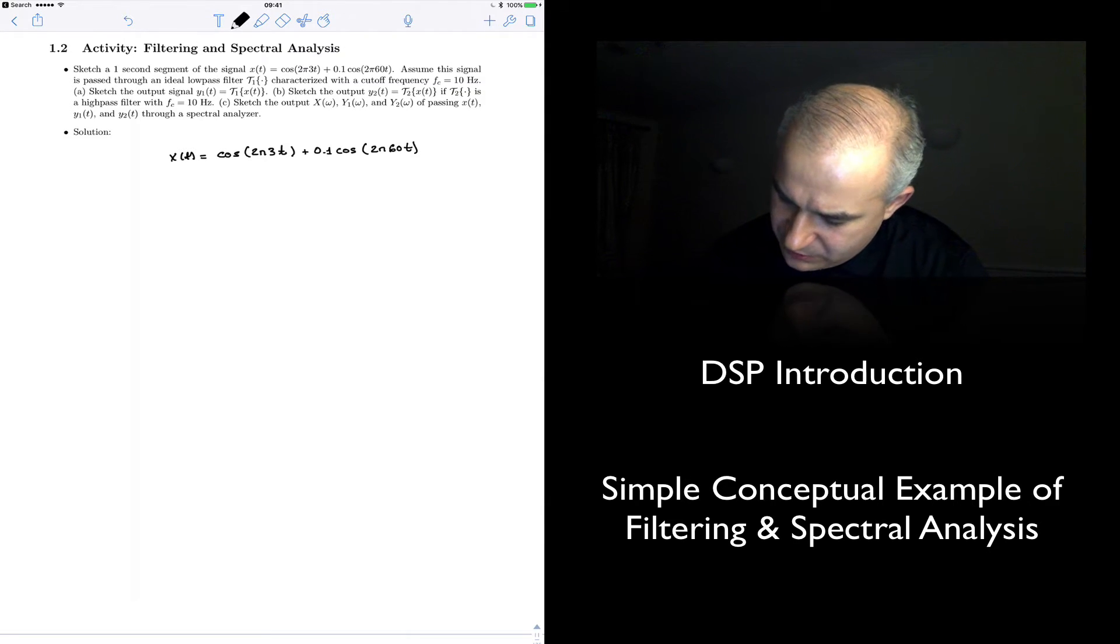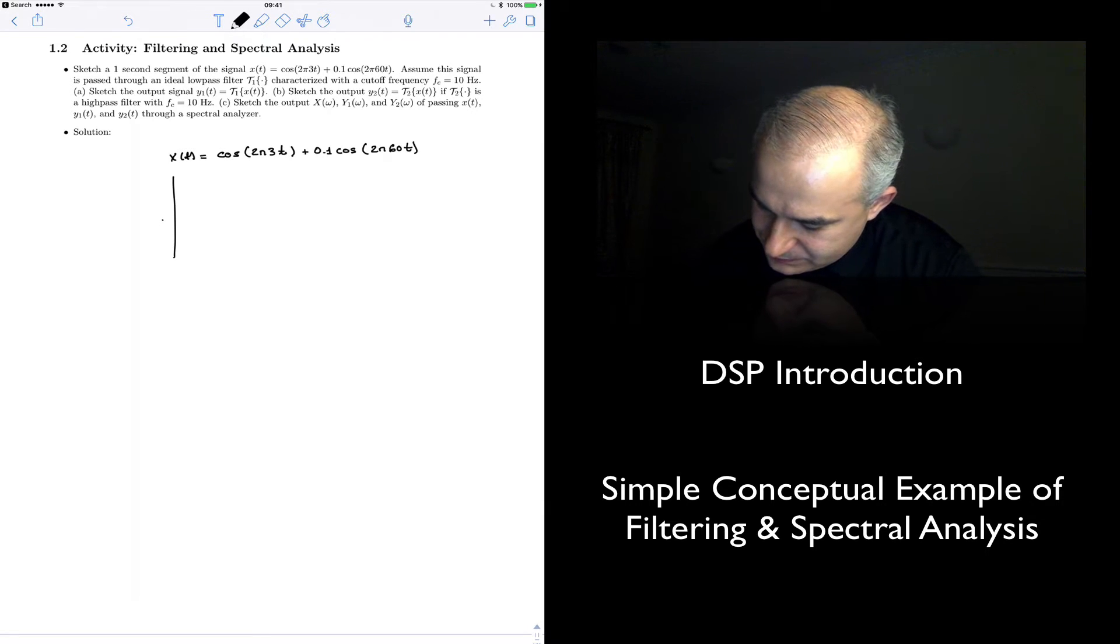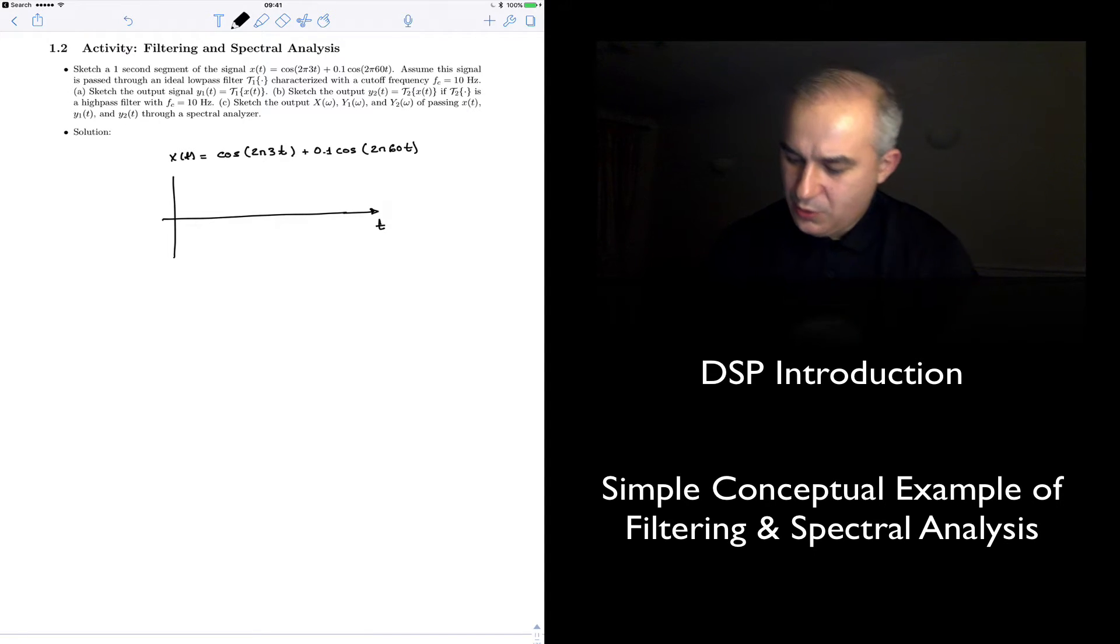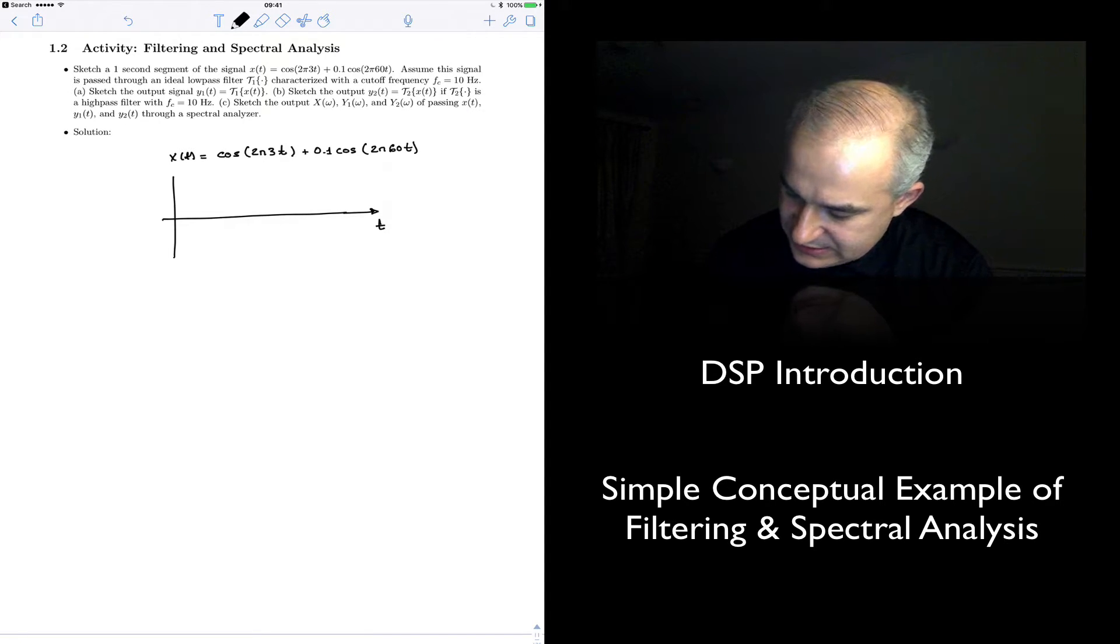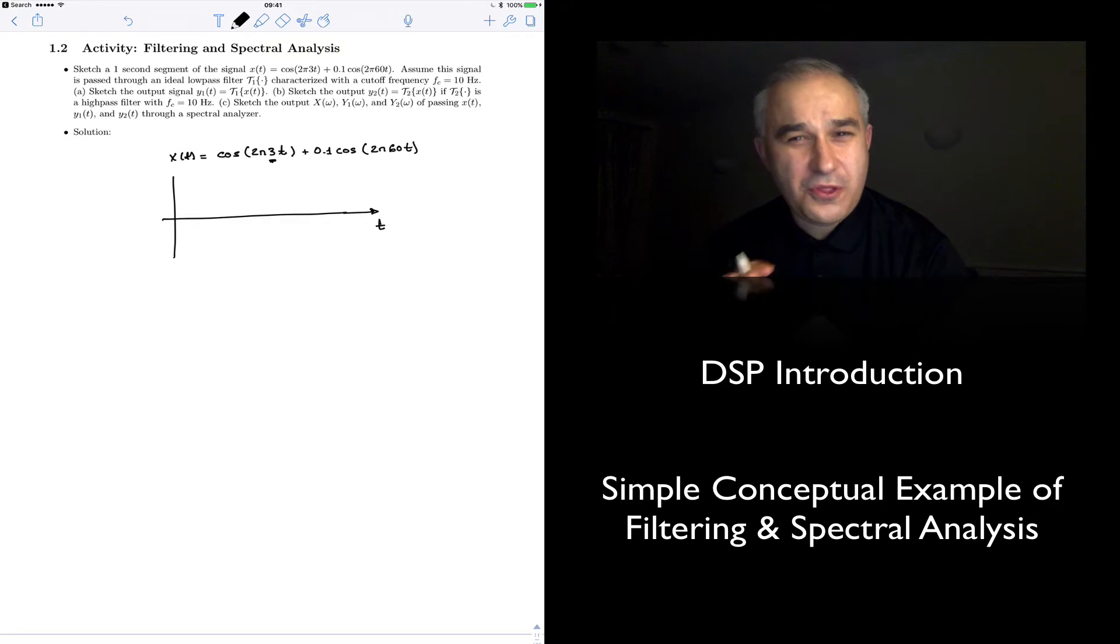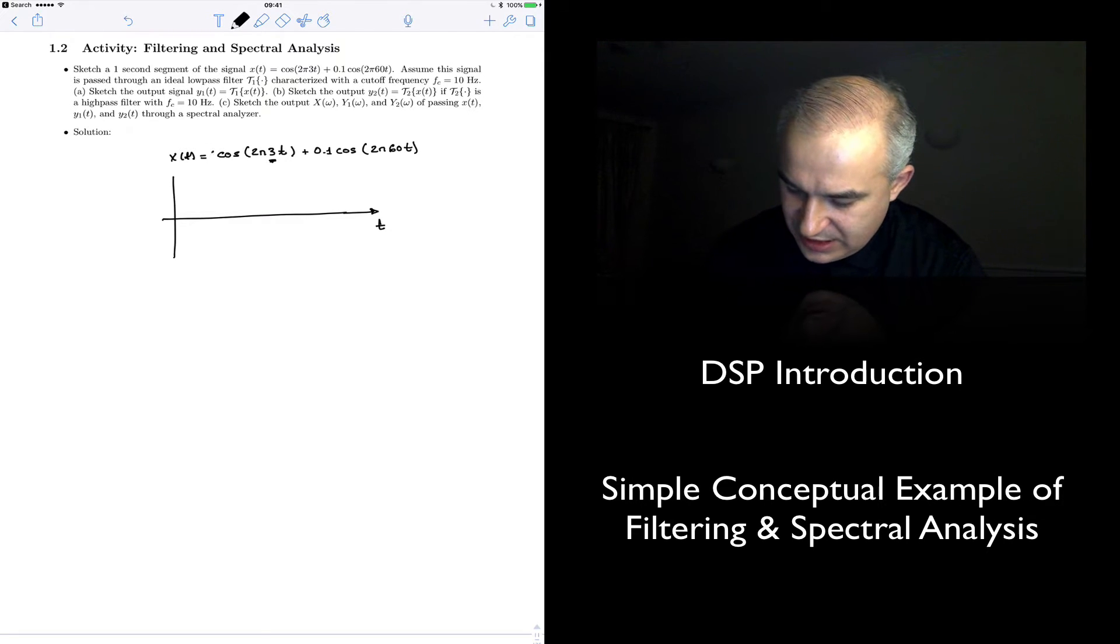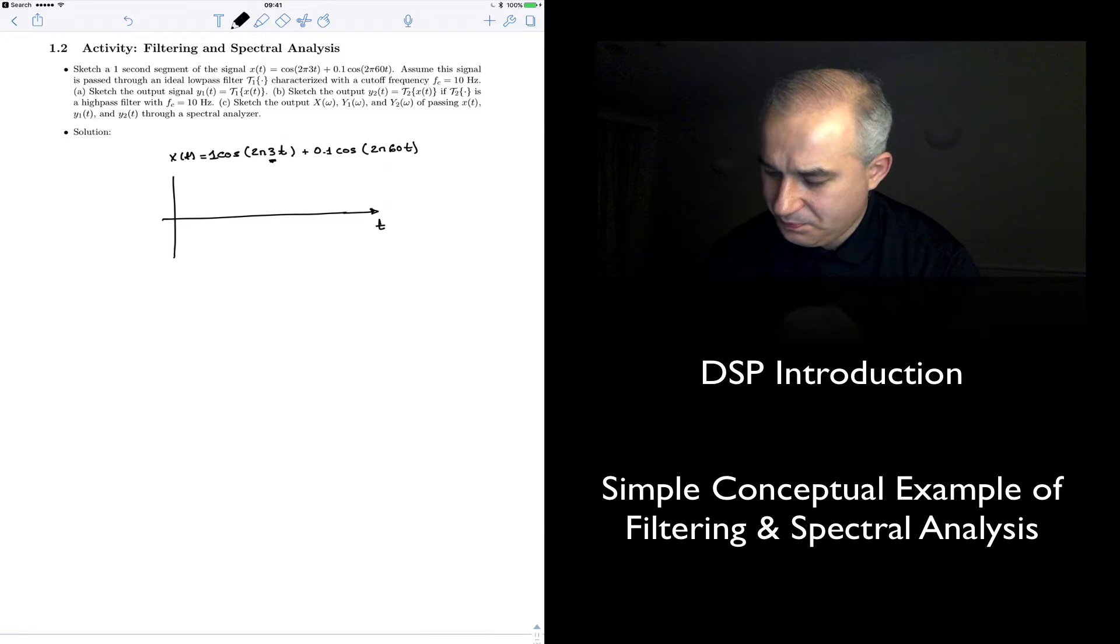The signal is x(t) = cos(2π3t) + 0.1cos(2π60t). And then we have to do some filtering and spectral analysis. Now, in this case it's very easy because the signal is already sinusoidal. We can see that there is a sinusoid of 3 Hz with an amplitude of 1 and a phase of 0. And then there is another one of 60 Hz with an amplitude that is much smaller.